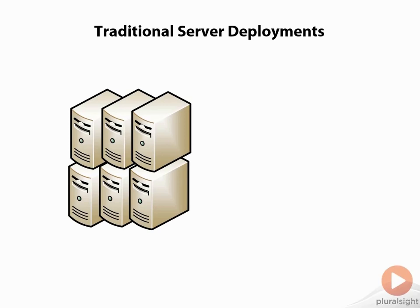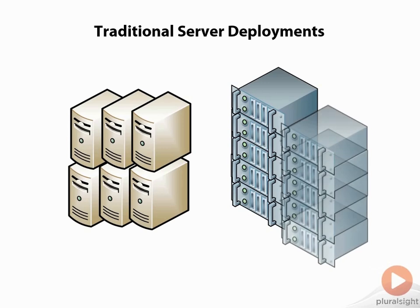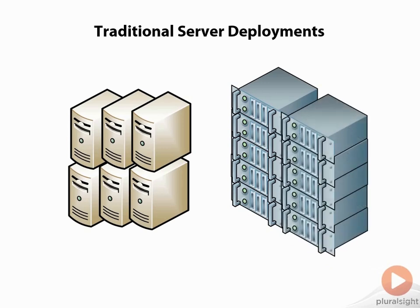We started to move into more tightly managed blade environments, with more converged servers putting more compute and networking power into smaller spaces using rack-mounted servers. Even with that one-to-one mapping of one application per server, it was much easier to get greater density in blade and rack server environments. But again, we reached a point where even that was becoming inefficient.